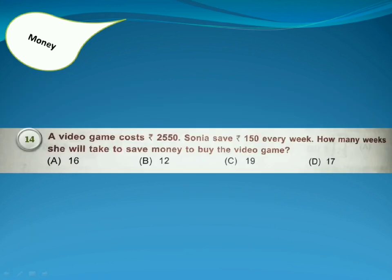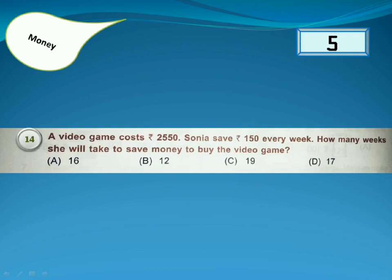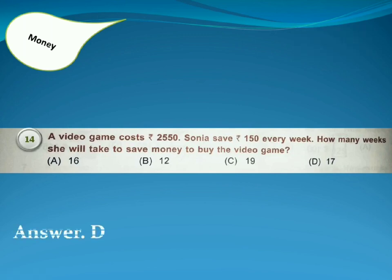A video game costs 2550 rupees. Sonia saves 150 rupees every week. How many weeks will she take to save enough money to buy the video game? Answer is Option D. Ideally we should divide 2550 by 150, but by multiplying 150 with every option, we get 17 multiplied by 150 equals 2550, which is the game's cost.